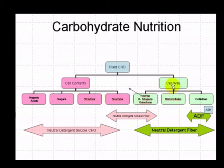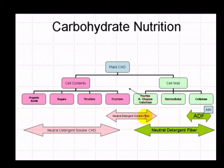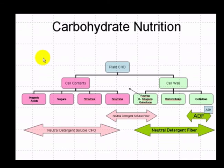Then we have a component that measures the actual structural component of the cell, which includes the cellulose as well as the ash in the cellulose, the hemicellulose, and a component consisting of pectins, glucans, and galactans. The neutral detergent soluble fiber also includes the fructans, pectins, and glucans. By taking the differences of these fiber measures, the actual individual pools can be calculated by subtraction.